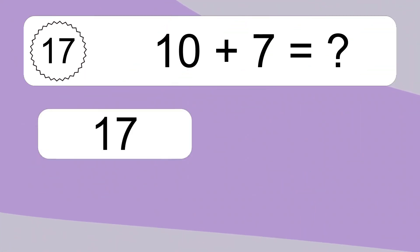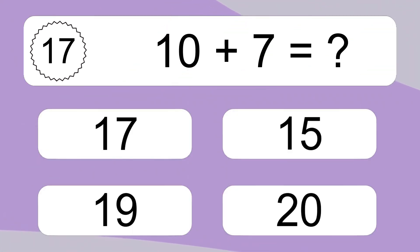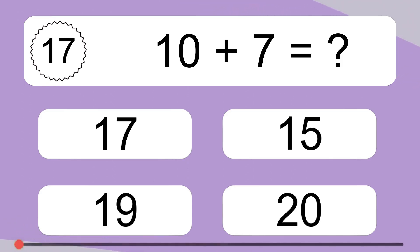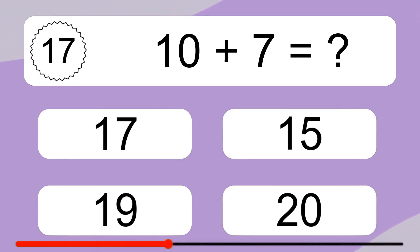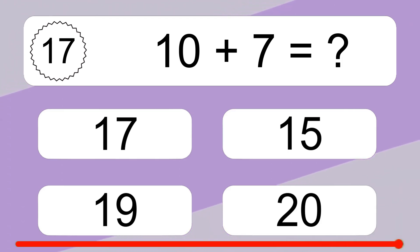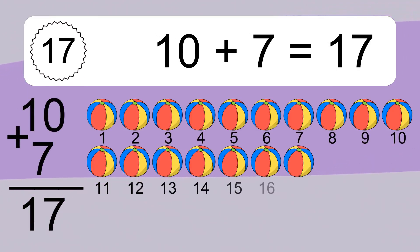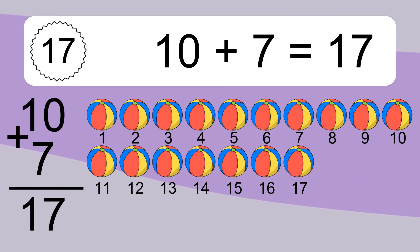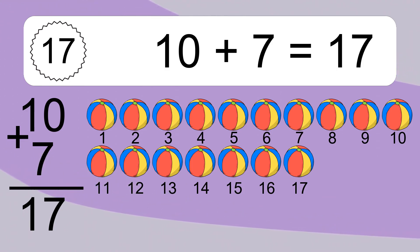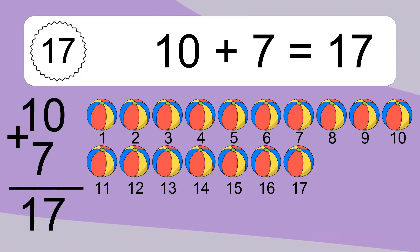10 plus 7 equals what? 10 plus 7 equals 17. Let's count it. 11, 12, 13, 14, 15, 16, 17.